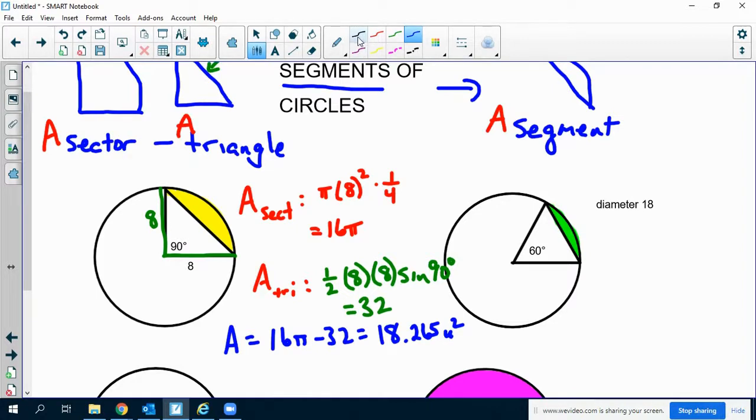Second problem, I'm going to do the same thing. This has a radius of 9. The area of the sector is going to be π times 9² times 60 over 360, or times 1/6. And that's 27π over 2, or you can write it as 13.5π if you want.